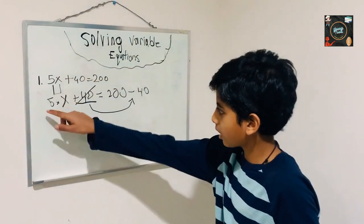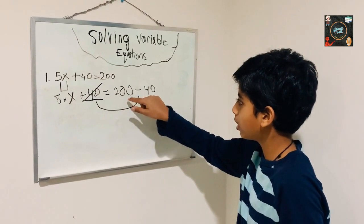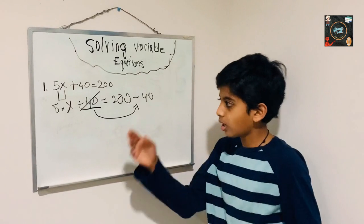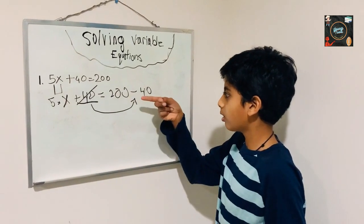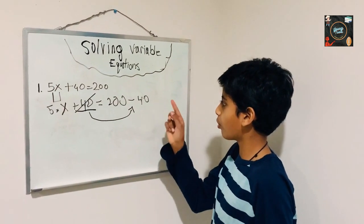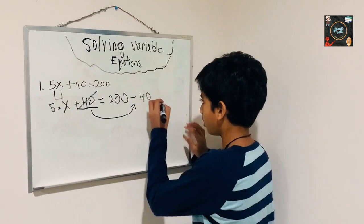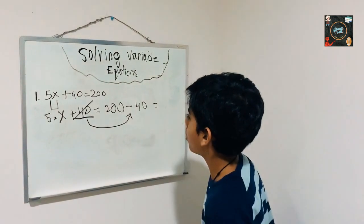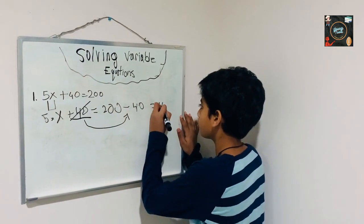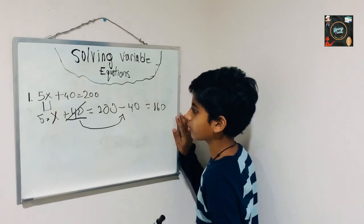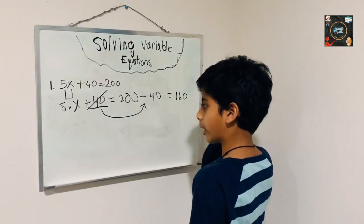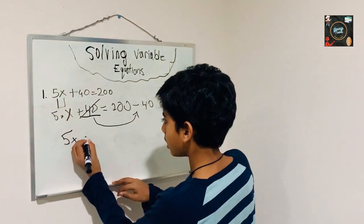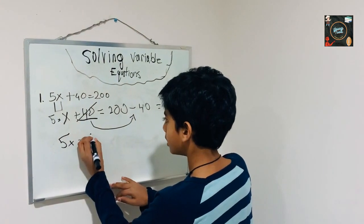Now I can see that 5 times x is equal to 200 minus 40. We have to subtract 40 from 200, which is equal to 160. So now I'll write the final equation — we have 5x equal to 160.